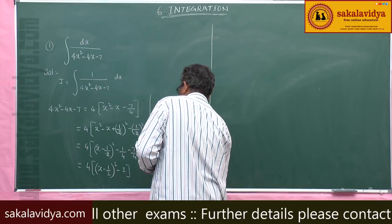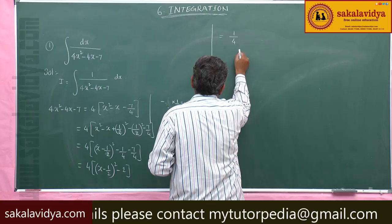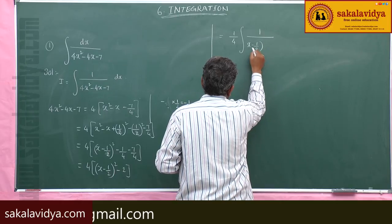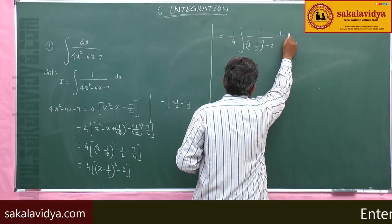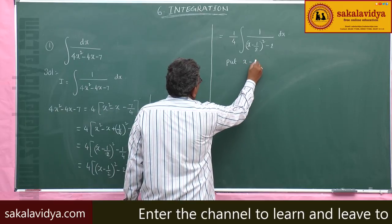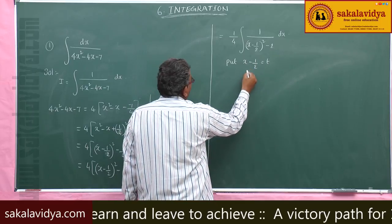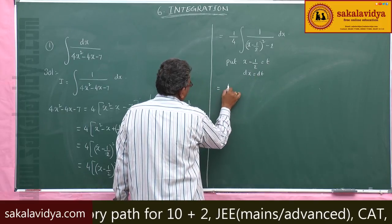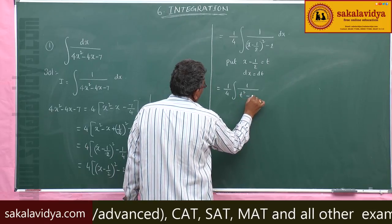Now start the integration: (1/4)∫1/[(x-1/2)²-2]dx. Use the substitution x-1/2 = t, differentiate to get dx = dt. This becomes (1/4)∫1/(t²-2)dt.